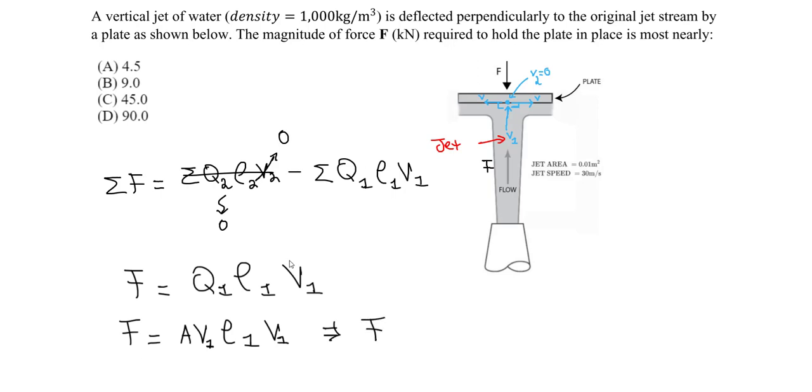So the force is going to be A times the rho one times V1 squared. The area in this case is going to be 0.010 meters squared. And our rho is also given to be 1,000 for water, kilogram per cubic meter. And also we have the velocity. This is squared because we have a velocity and a velocity. It's going to be squared, so that is 30 meter per second squared.